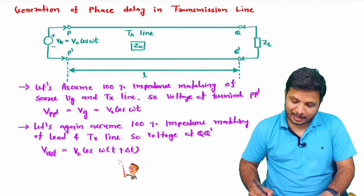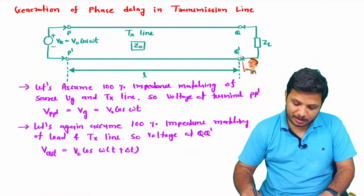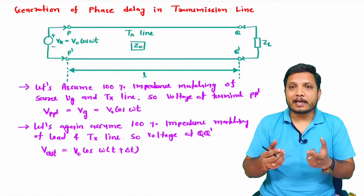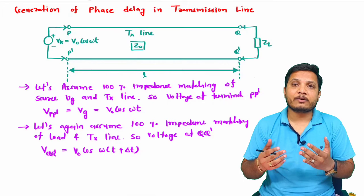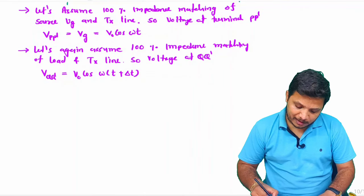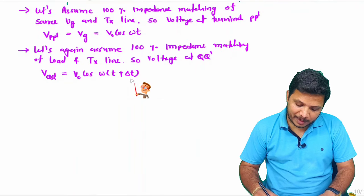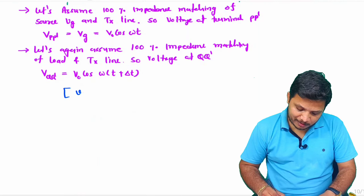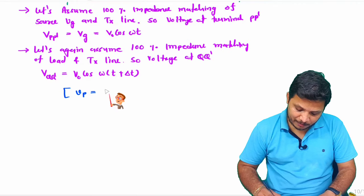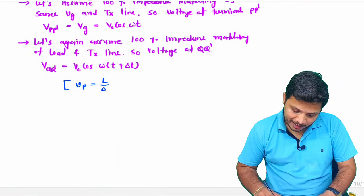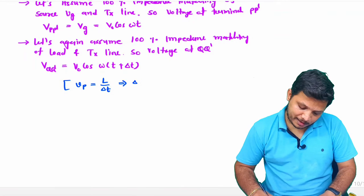Let delta t be the time taken to travel from the input terminal to the output terminal. Delta t depends on the propagation velocity of the signal. If the propagation velocity is Vp, then Vp equals the length of the transmission line L divided by the travel time. Therefore, delta t equals L divided by Vp.